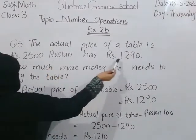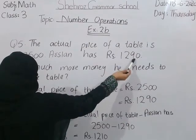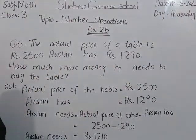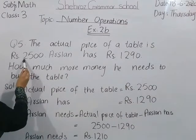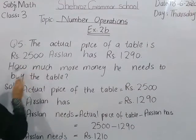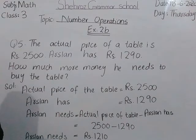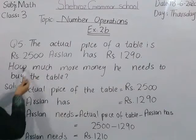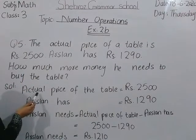Arslan के पास Rs. 1290 है, और उसने एक टेबल परचेस करना है, जिसकी एक्चुअल प्राइस 2500 है, तो बच्चों कितने ज्यादा पैसे Arslan को चाहिए, कि वो 2500 का टेबल परचेस कर सके। Solution है: